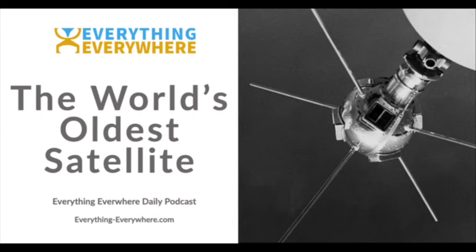Vanguard 1, however, the fourth satellite ever put in orbit, is still there. It has never re-entered the atmosphere in the 62 years since it was launched, and given its orbit, it isn't going to be coming back to Earth anytime soon. This makes Vanguard 1, and its upper launch stage, the oldest man-made objects in orbit.